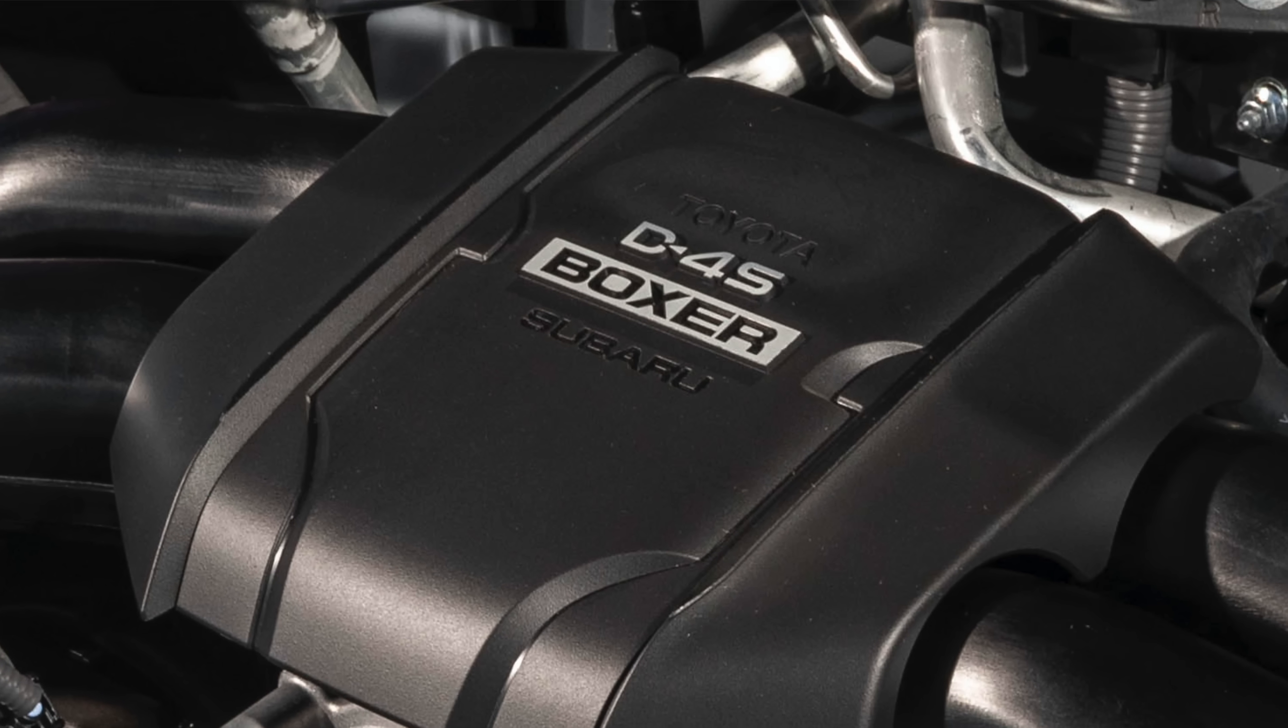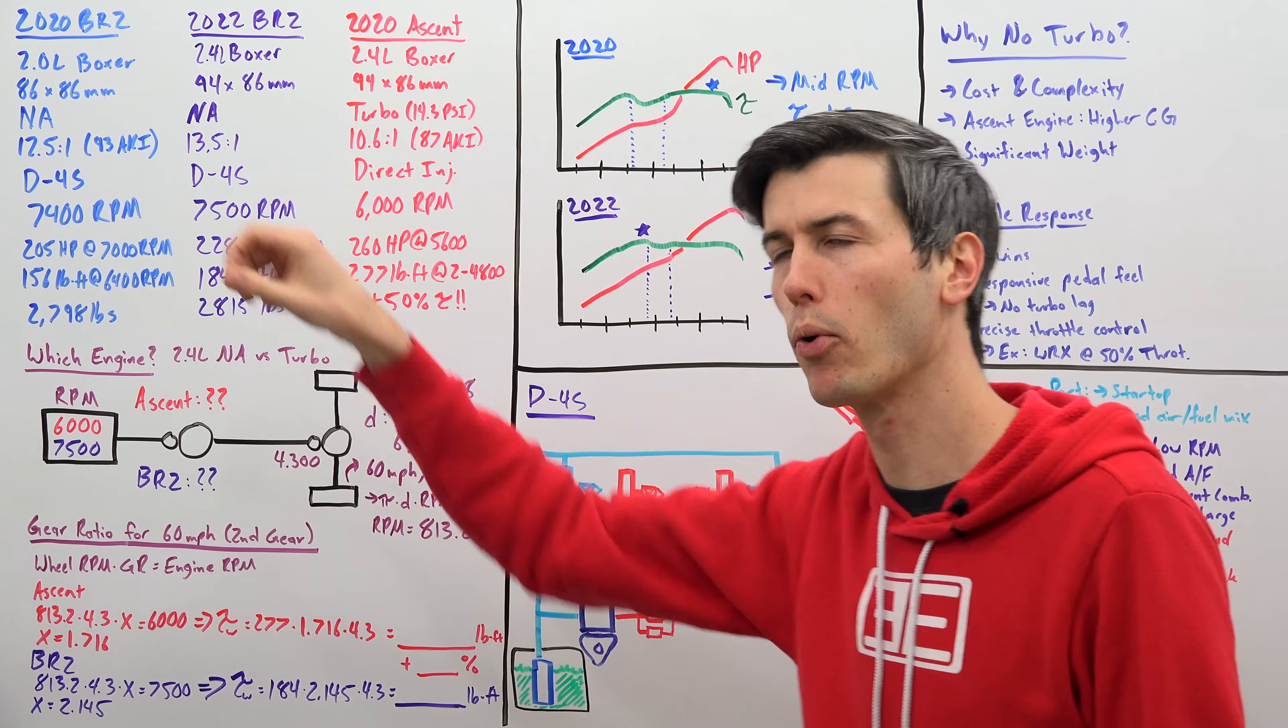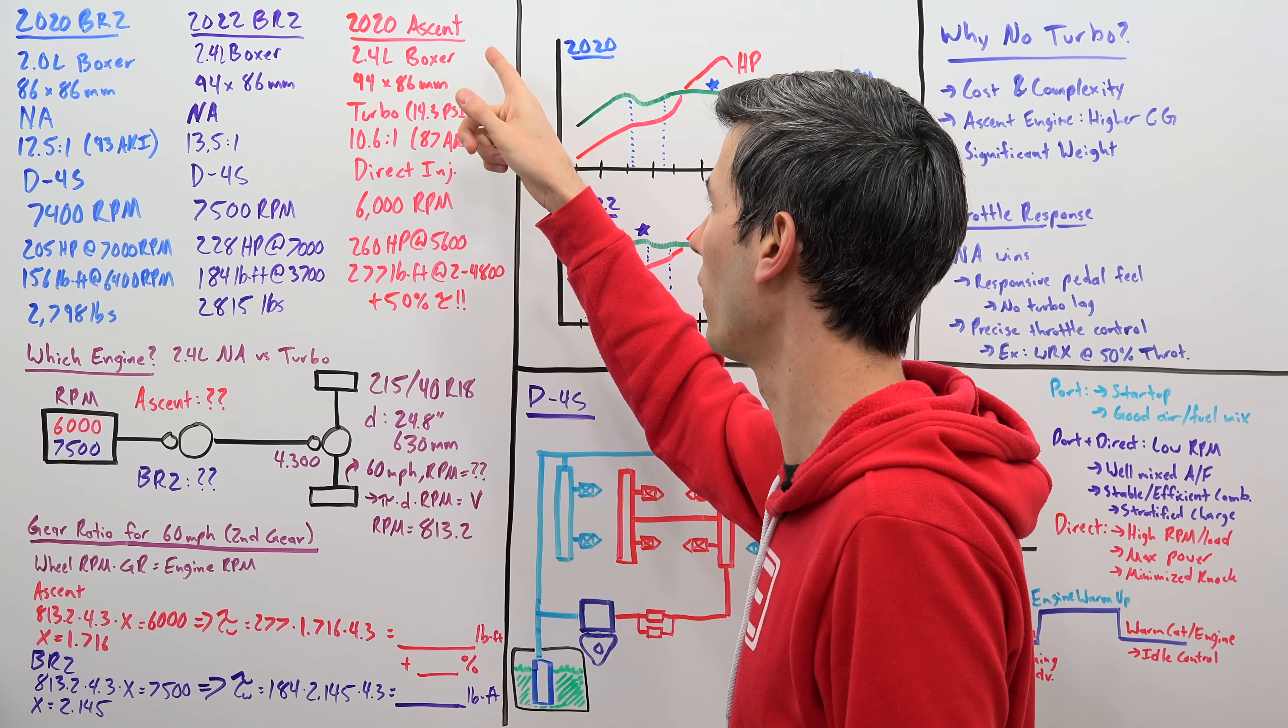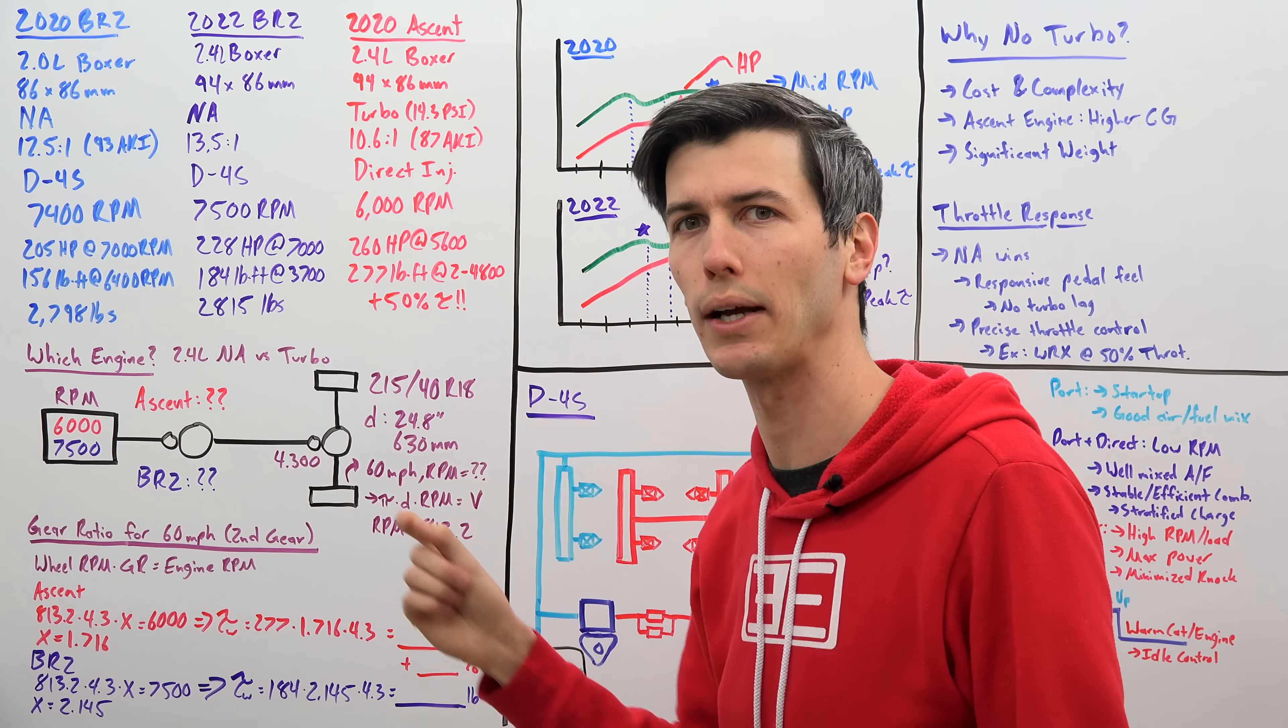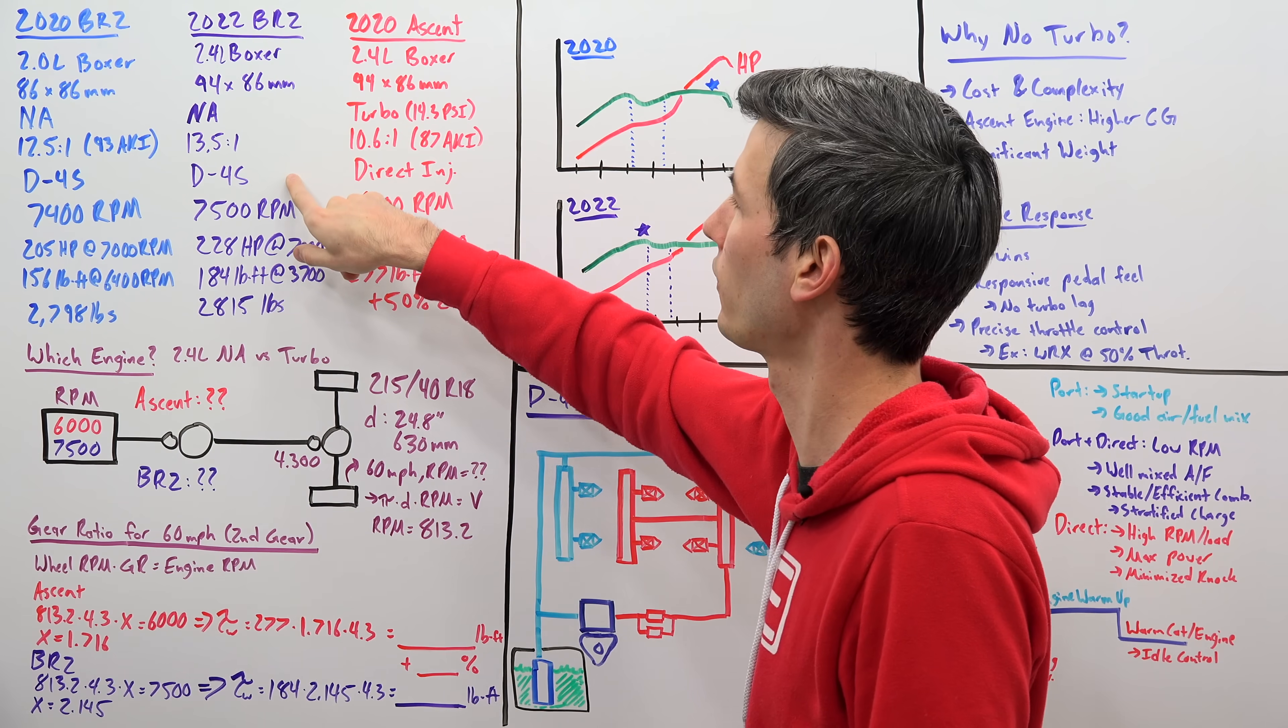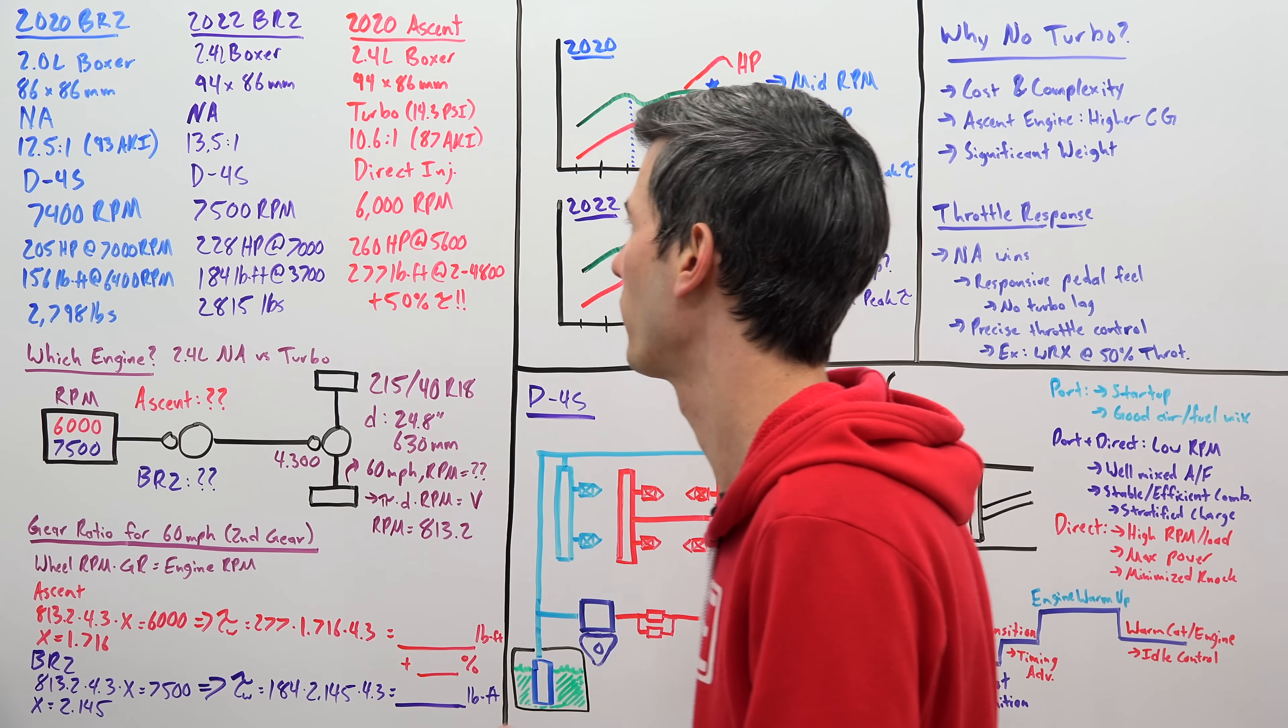One of the things I'm excited to see carry over from the previous engine is the fact that it's using direct and port injection. So when Subaru went to the 2.4 liter turbo on the Ascent it is just direct injection and this is using a similar block. However it has direct and port injection as well. And so we'll talk later on about why that's important.